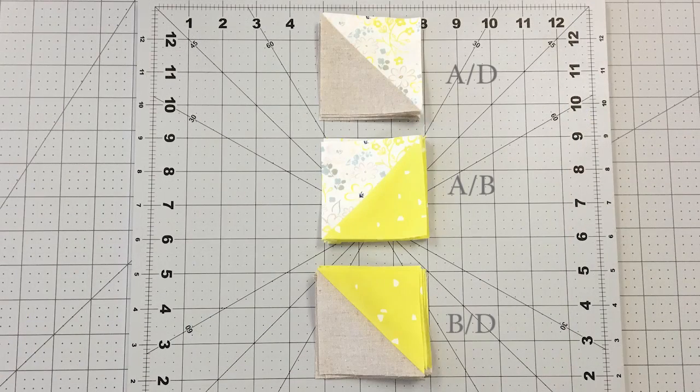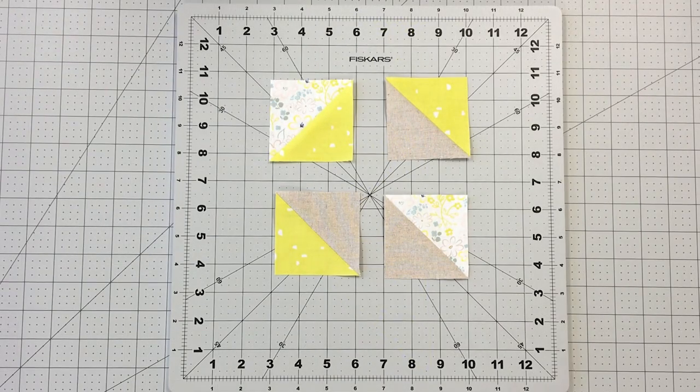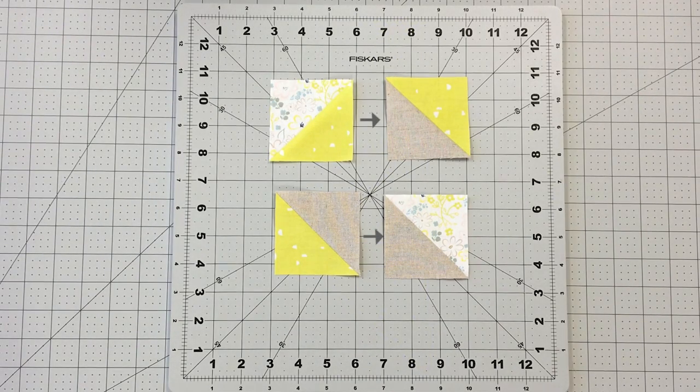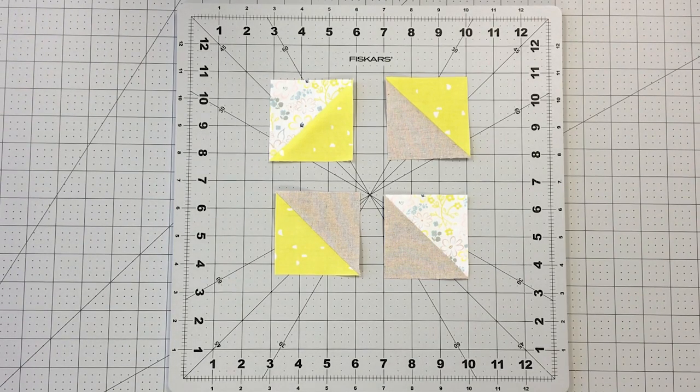To create this quilt block you will need four AD half square triangles, four AB half square triangles and eight BD half square triangles. To create the first part of your block, sew an AB half square triangle to a BD half square triangle and a BD to an AD half square triangle.